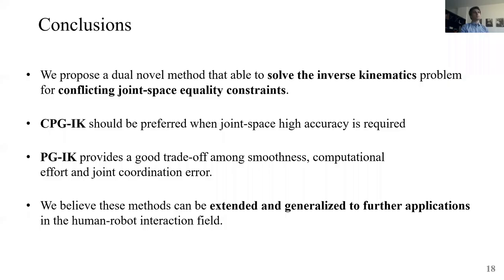So getting to our conclusions, we proposed a novel method that was able to solve the inverse kinematics and to add additional joint equality constraints by exploiting the redundancy of the robot. The CPGIK had the best performances in terms of joint space error and the PGIK can be considered as a good trade-off among smoothness, computational effort, and joint coordination. We are aware that we use the Harmony exoskeleton as a platform to demonstrate the method, but we believe this approach can be transferred to new applications in the fields of robotics, especially when the robots are expected to interact with the humans. So thank you for your attention and if you have any questions, please contact me.